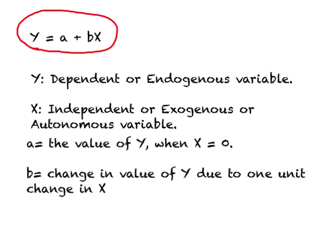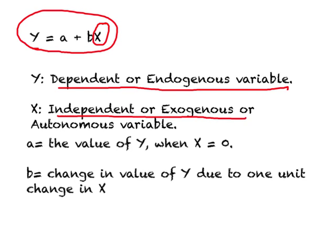Whenever we write an equation like this in economics, you should remember we have direction of causality in mind. The y variable will always be the dependent or endogenous variable, and the x variable will always be the independent, exogenous, or autonomous variable. So whenever we write an equation like this, we have direction of causality in mind — that means x causes y, and not the other way around.